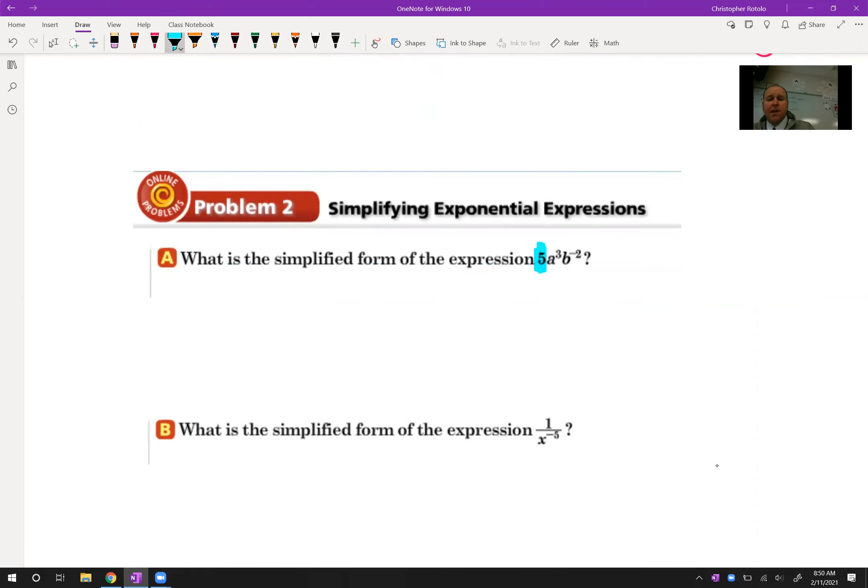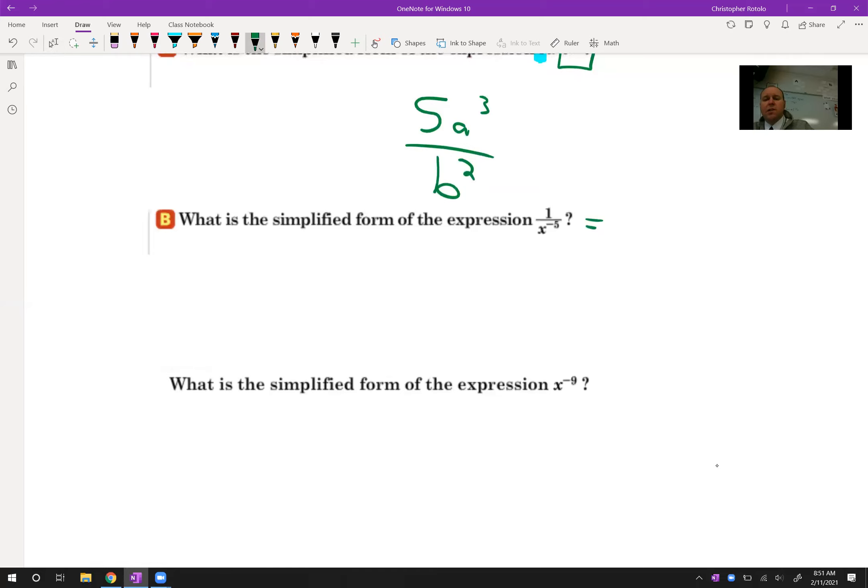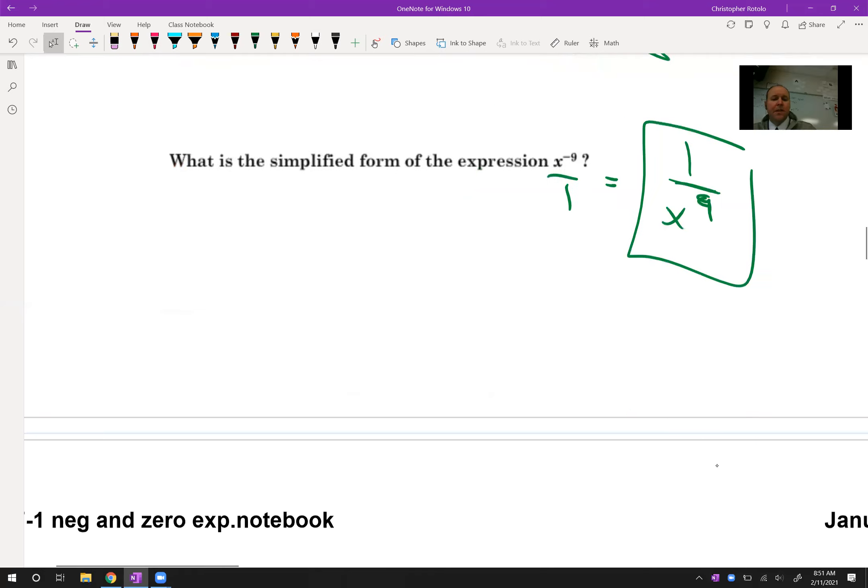Alright, so what we'll do is kind of evaluate each factor here. 5 is just fine, so I'll leave it where it is. A to the 3rd is just fine. The B to the negative 2nd should go to the bottom. So we start to identify those. Like we had said earlier, if it's negative exponent in the bottom, that means it should go to the top. And if it is in the top, we can make it look like a fraction. This is 1 over x to the 9th. And so I hope as we kind of work through these and model through them, you're like, yeah, I can do that.